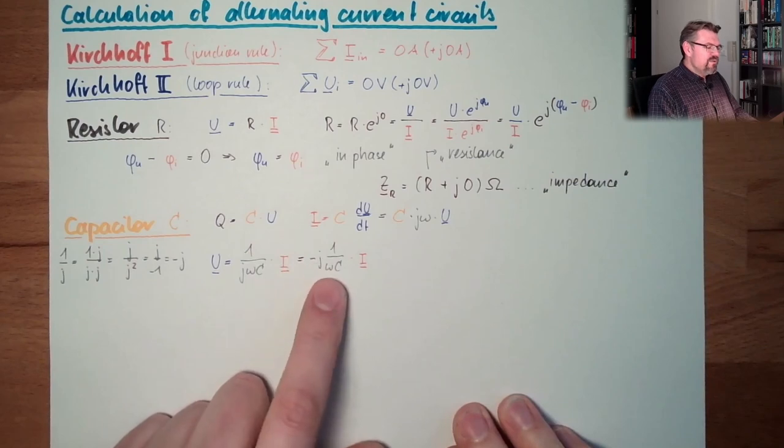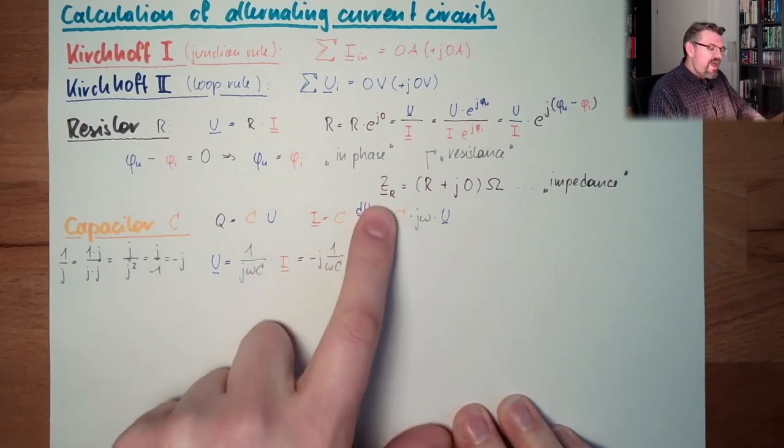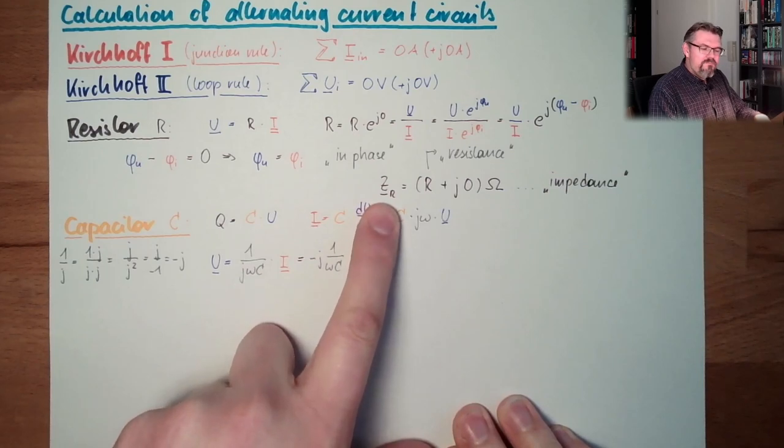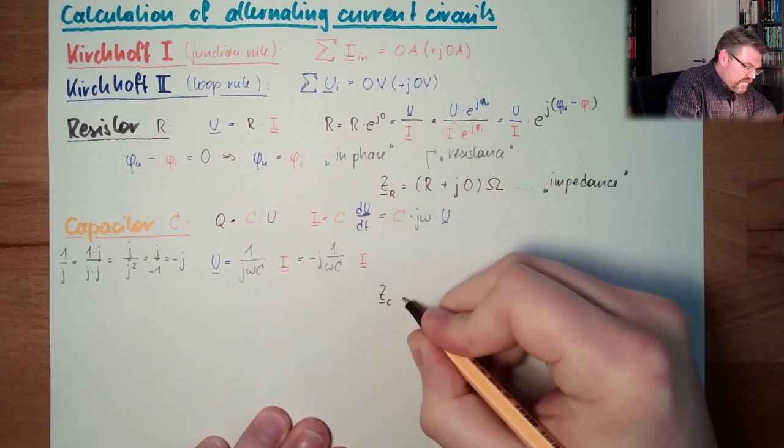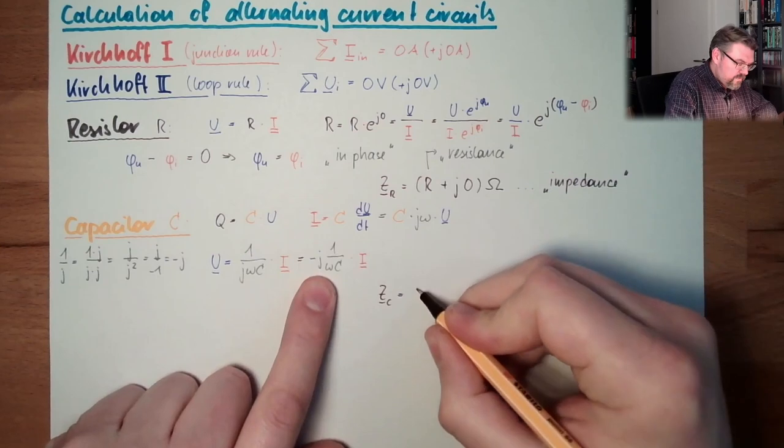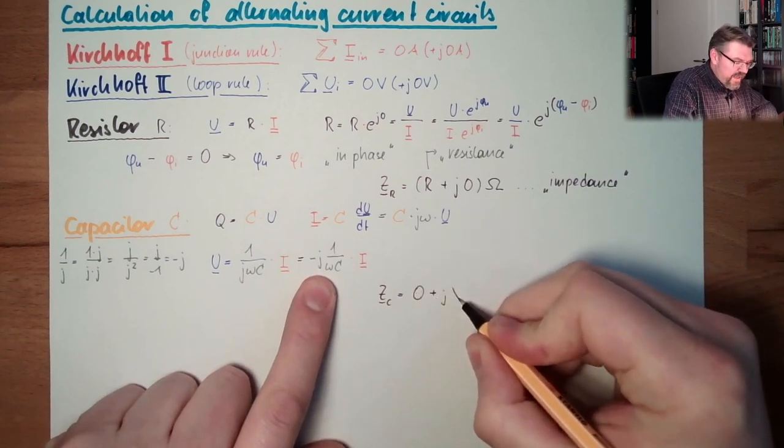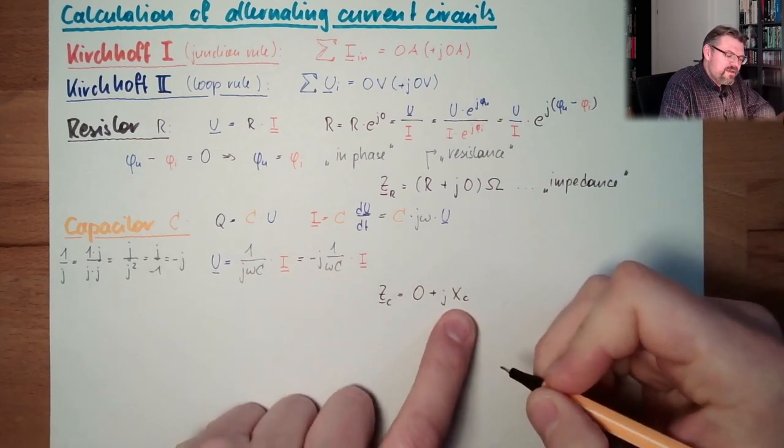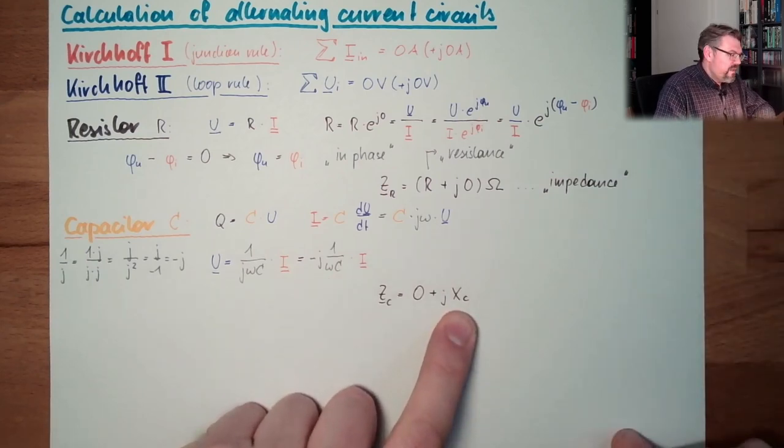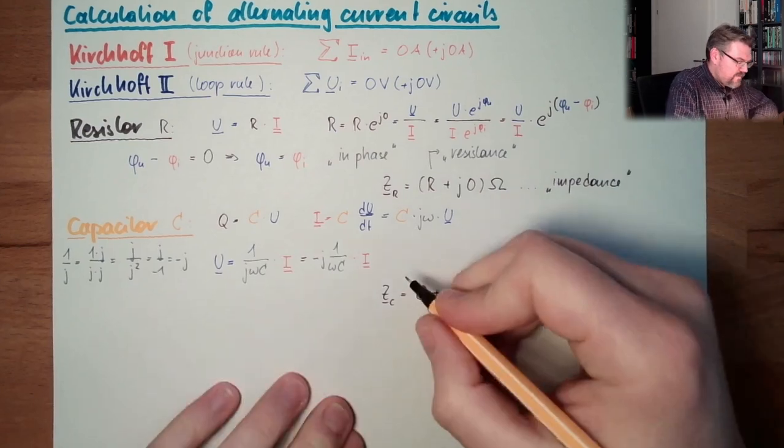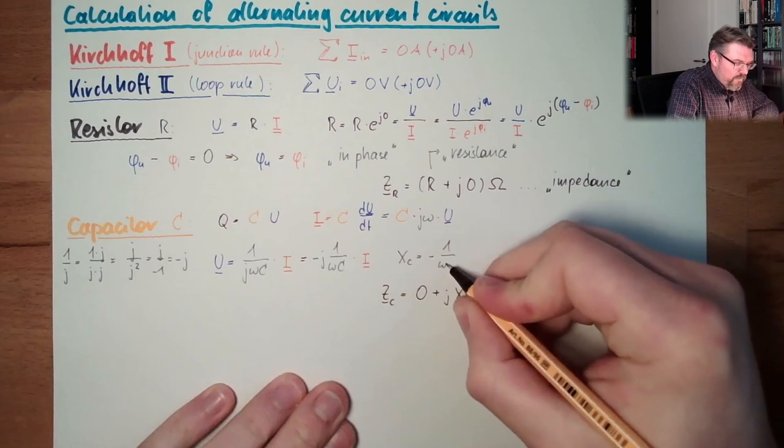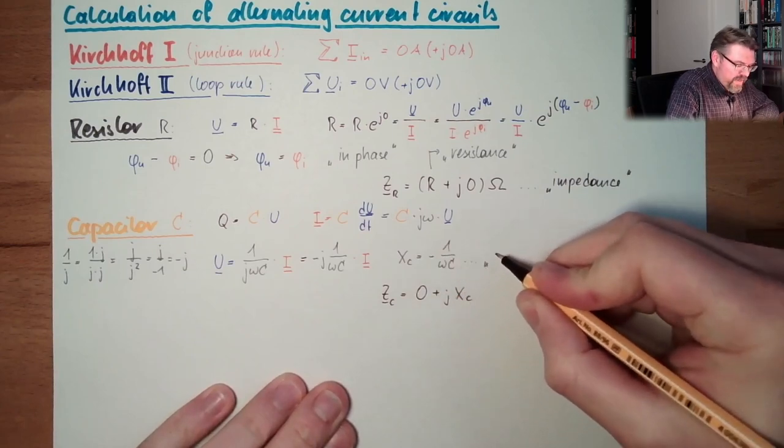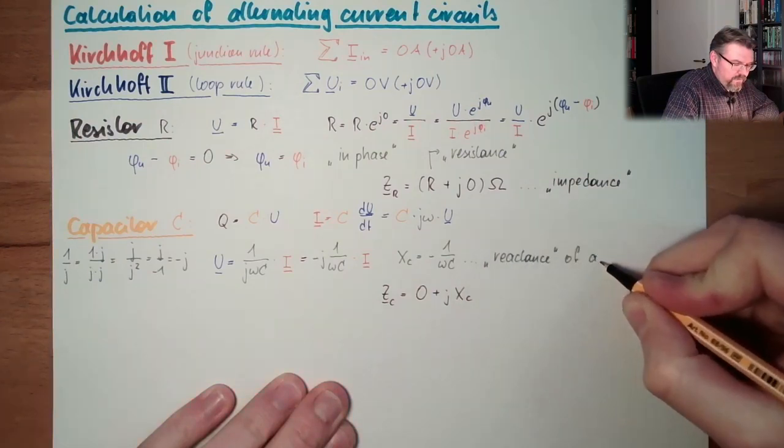Look at that. This looks like Ohm's law. And if again you would use impedance, so a complex resistance, our set C. We would have, there is no real part. And we say there is plus J and Xc. And this Xc is the so-called reactance of a capacitor. And what is our Xc? Xc equals minus 1 divided by omega C. This is called reactance of a capacitor.